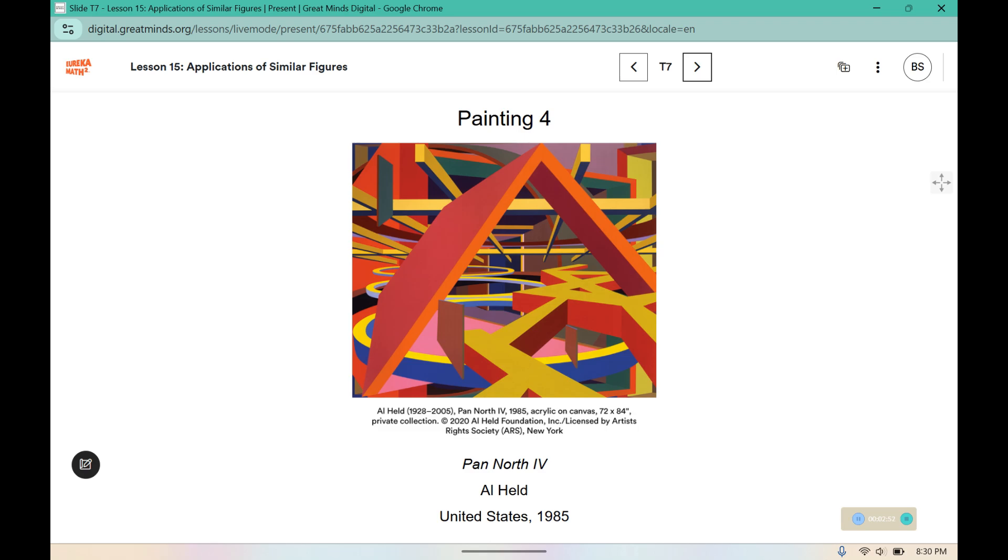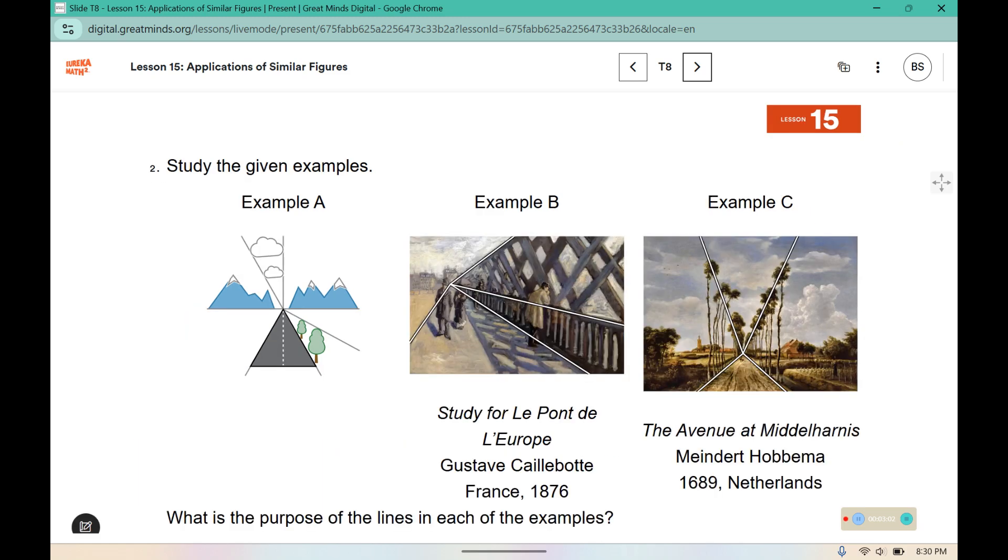This also has some depth to it. You can see that there are layers upon layers, and it gives a feel of depth to this artwork. What is the purpose of the lines in each of these examples? It shows perspective. It gives an aspect of depth to the artwork. It gives you a focal point.